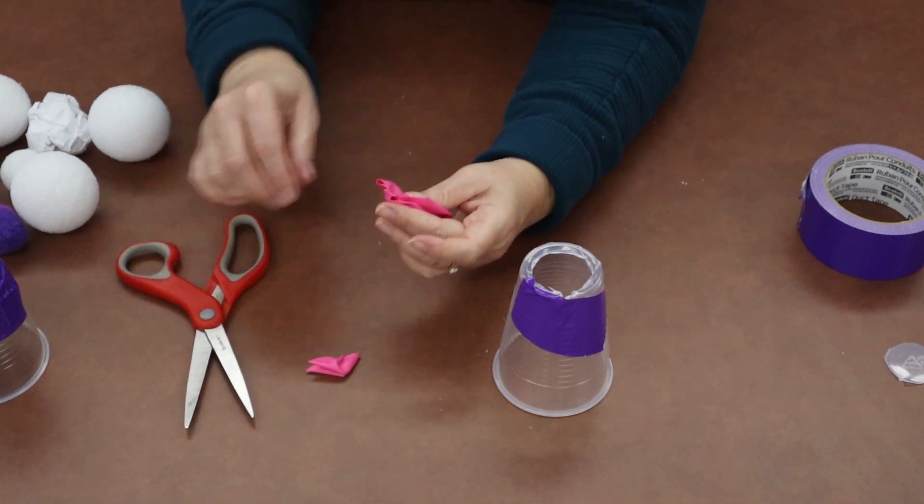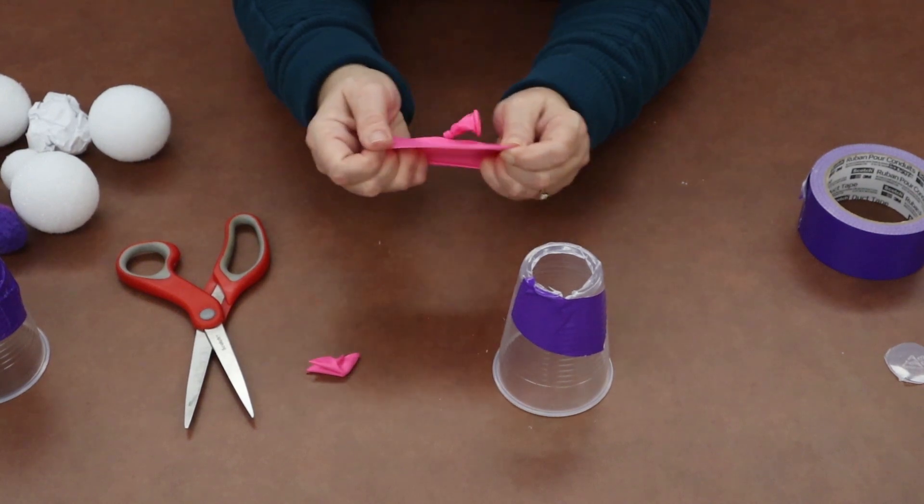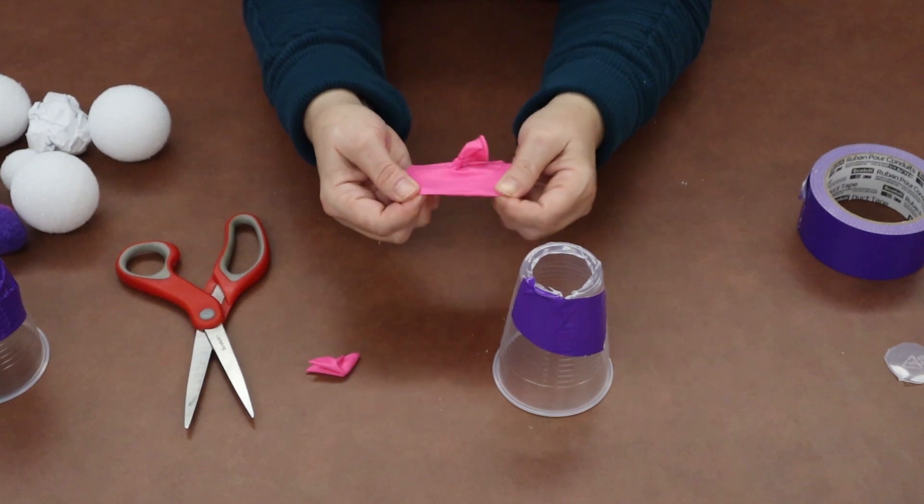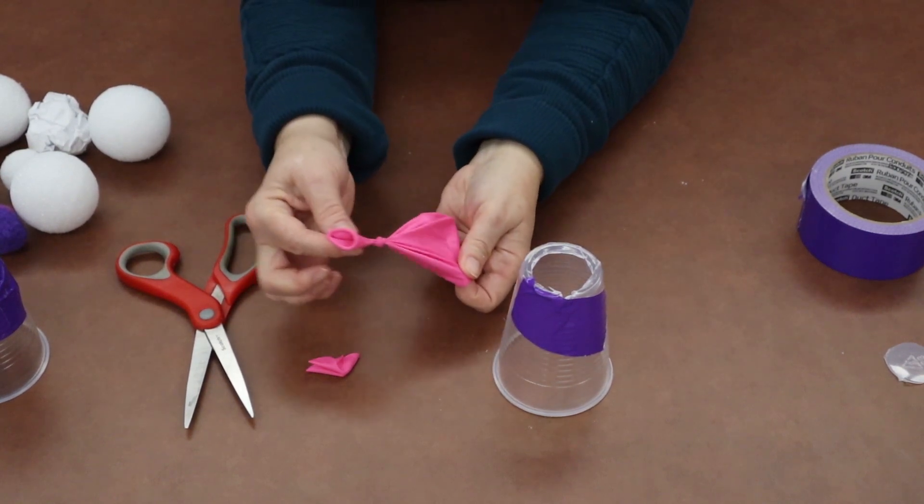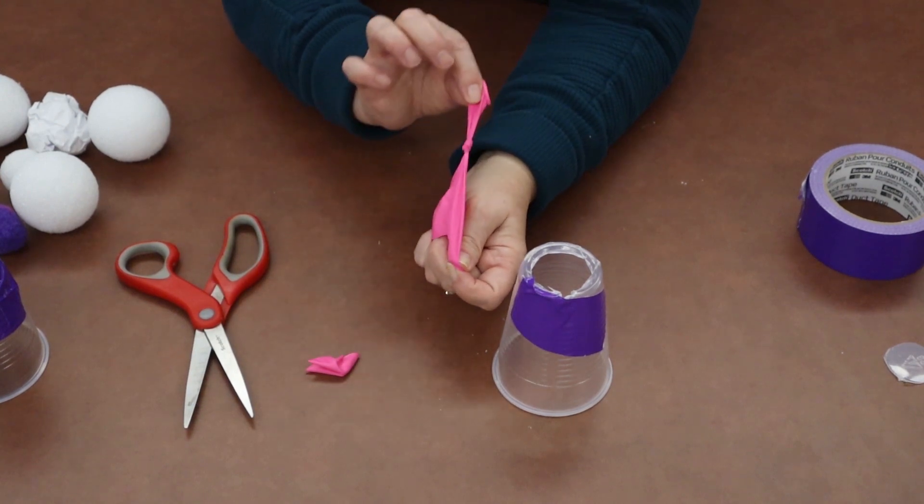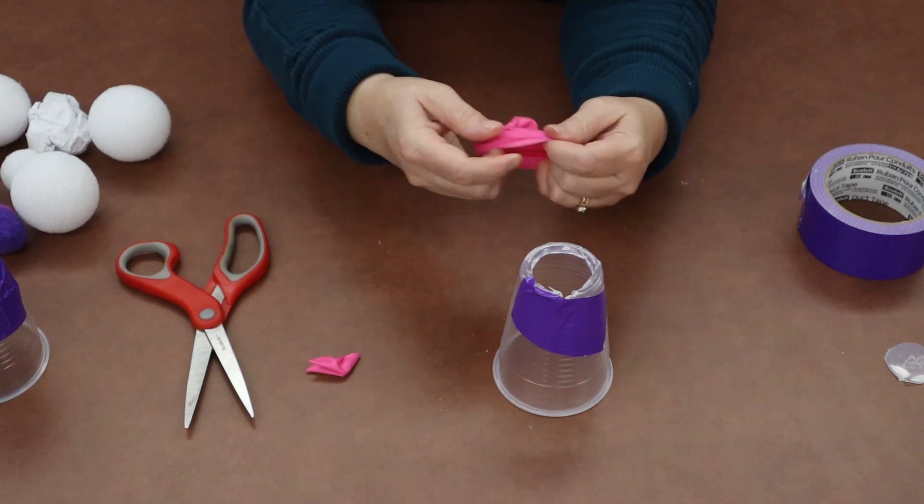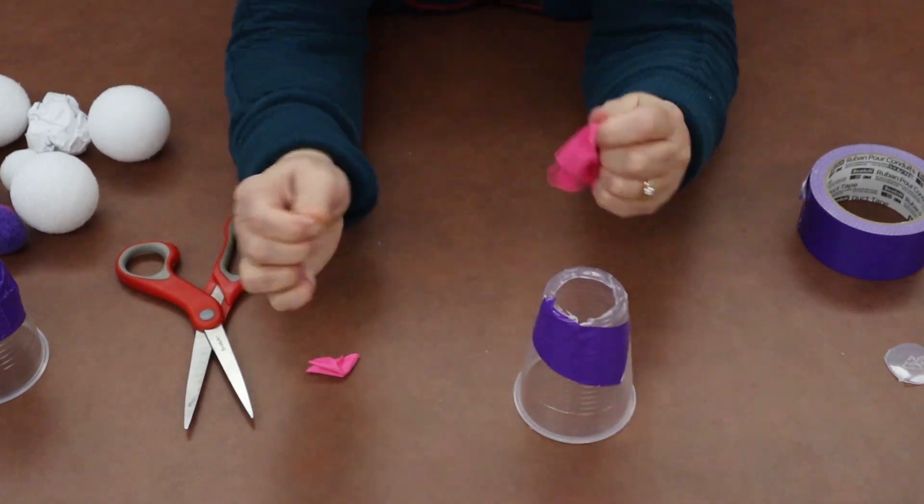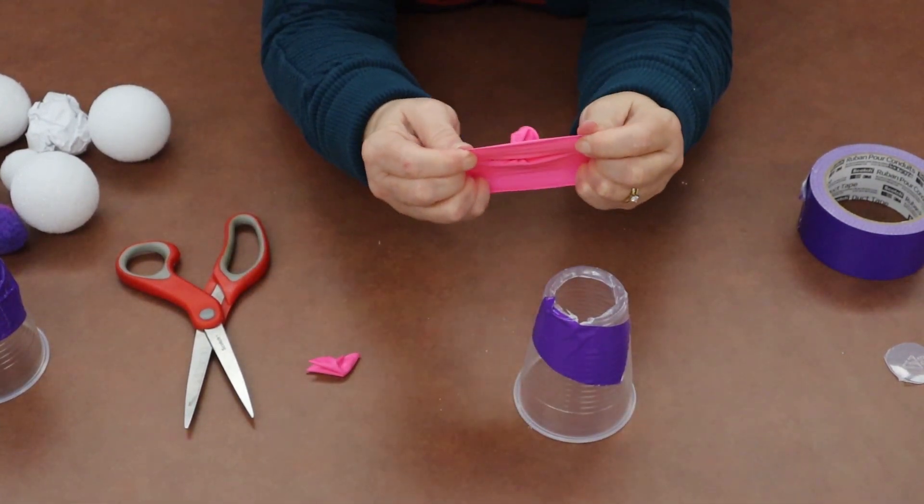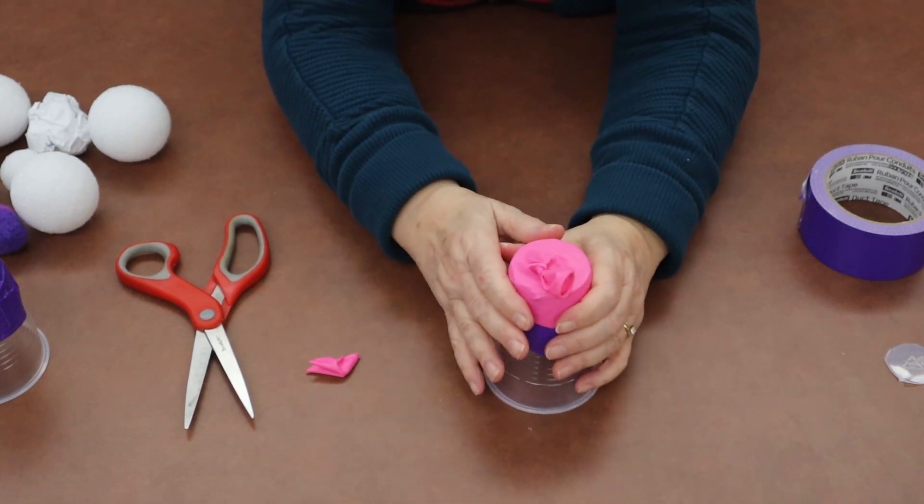And what that's going to do is allow us to be able to stretch this part over the end of our cup. And the reason that we want this little tail on here is it'll give us something to pull and stretch the balloon out when we go to actually shoot things out of our snowball shooter. So you'll take your open end of your balloon and stretch it over your cup.